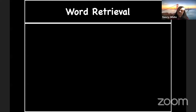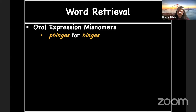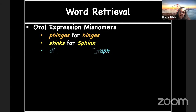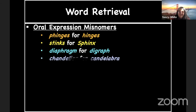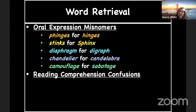Word retrieval — but this is word retrieval based on some phonological confusion. These were mistakes students made in their oral expression. Hinges for hinges became 'phinges,' sphinx became 'stinks,' digraph became 'diaphragm,' candelabra became 'chandelier,' sabotage became 'camouflage.' These were actually word identification errors. Imagine the confusion that would cause in reading comprehension. One student read 'hypochondriac' for 'hypocrite,' and another read 'amnesia' for 'insomnia.'